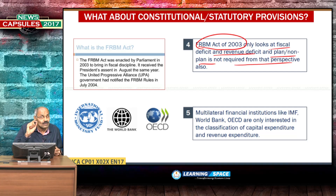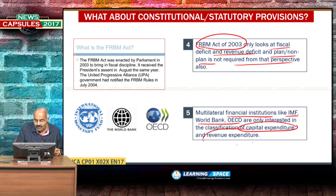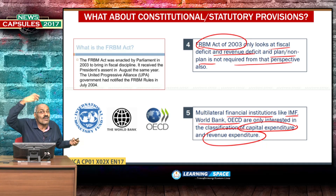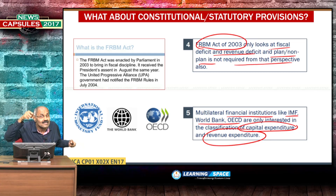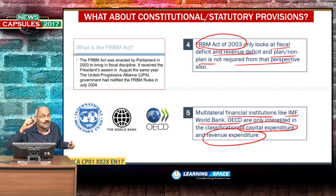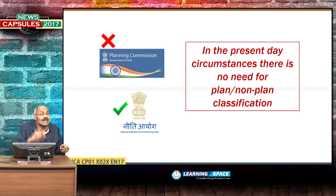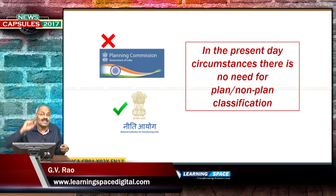Multilateral financial institutions like IMF, World Bank, and OECD are only interested in the classification of capital and revenue — they are not interested in plan and non-plan. Multilateral institutions are more interested in capital expenditure: how many assets are created and how expenditure is being spent for creation of assets. They strongly feel creation of assets is the only way for progress. So there is no need for plan and non-plan, as also recommended by the Rangarajan Committee in 2011.